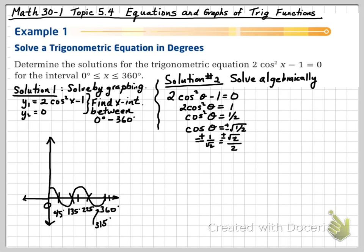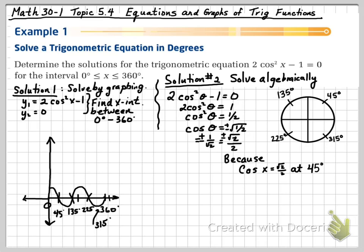Now, cosine is going to be positive root 2 over 2 at 45 degrees and at 315 degrees. And it's negative at 135 degrees and 225 degrees.